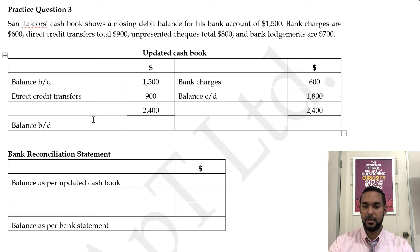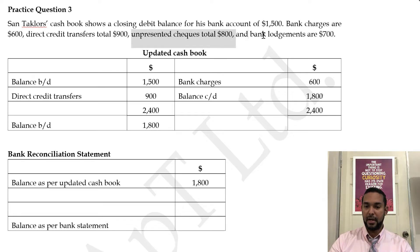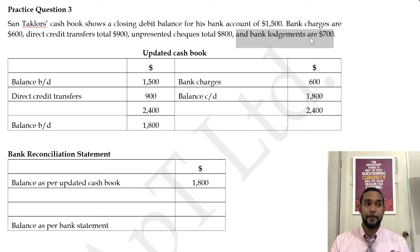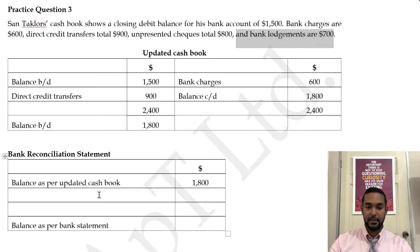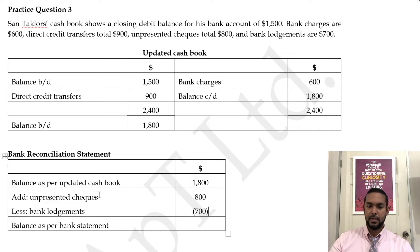So we put balance as per cash book of $1,800 in the bank rec. We're starting the bank rec with the updated cash book balance. We have un-presented checks totalling $800 and bank lodgements totalling $700. Because we're starting with the updated cash book balance, we reverse the logic — we add un-presented checks of $800 and minus bank lodgements of $700. $1,800 plus $800 minus $700 gives us $1,900. That is the balance as per bank statement. Simple and straightforward.